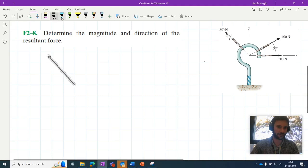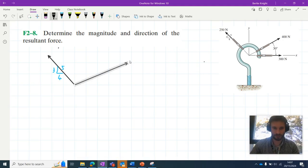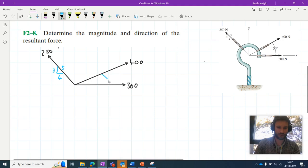So we've got this 3-4-5 triangle idea here along this 250 Newton force. That's meant to say 3. We've got this 400 Newton force acting 30 degrees to the horizontal. And we've got this 300 Newton force acting along the horizontal. 250. And let's just complete the geometry here. We don't really need to add a Y axis, do we? Let's add a Y axis. Why not?